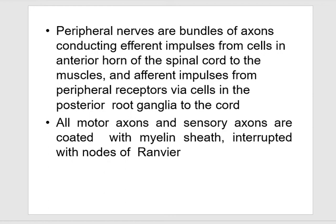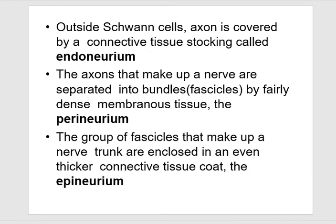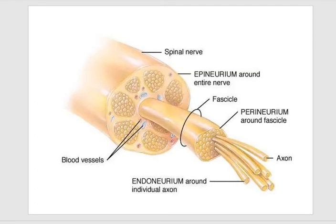All motor axons and sensory axons are coated with myelin sheath, interrupted by nodes of Ranvier. Outside Schwann cells, the axon is covered by a connective tissue stocking called endoneurium. The axons that make up a nerve are separated into bundles by fairly dense membranous tissue called the perineurium. The group of fascicles that make up a nerve trunk are enclosed in an even thicker connective tissue called the epineurium. So: individual nerve fibrils are covered by endoneurium, a group is covered by perineurium, and the nerve is covered by epineurium.